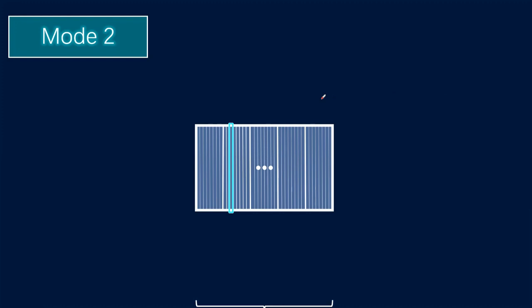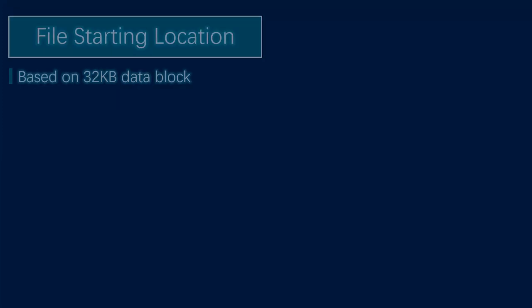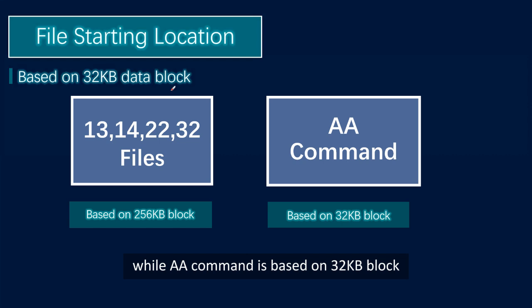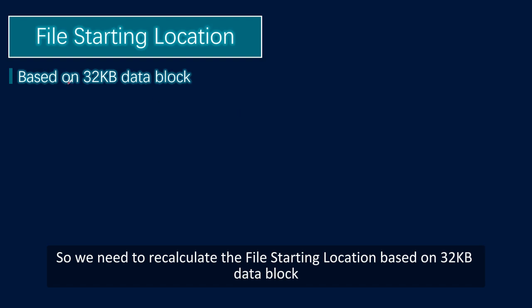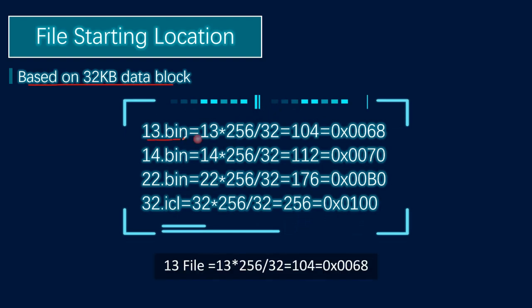In Mode 2, we can split 16 megabytes into 512 pieces of 32 kilobytes data blocks. Since the 13, 14, 22, and 32 files are based on 256 kilobytes blocks, while the AA command is based on 32 kilobytes blocks, we need to recalculate the file starting location based on 32 kilobytes data blocks. For example, the 13 file: 13 × 256 ÷ 32 = 104 = 0x0068, so the file starting location is 68.